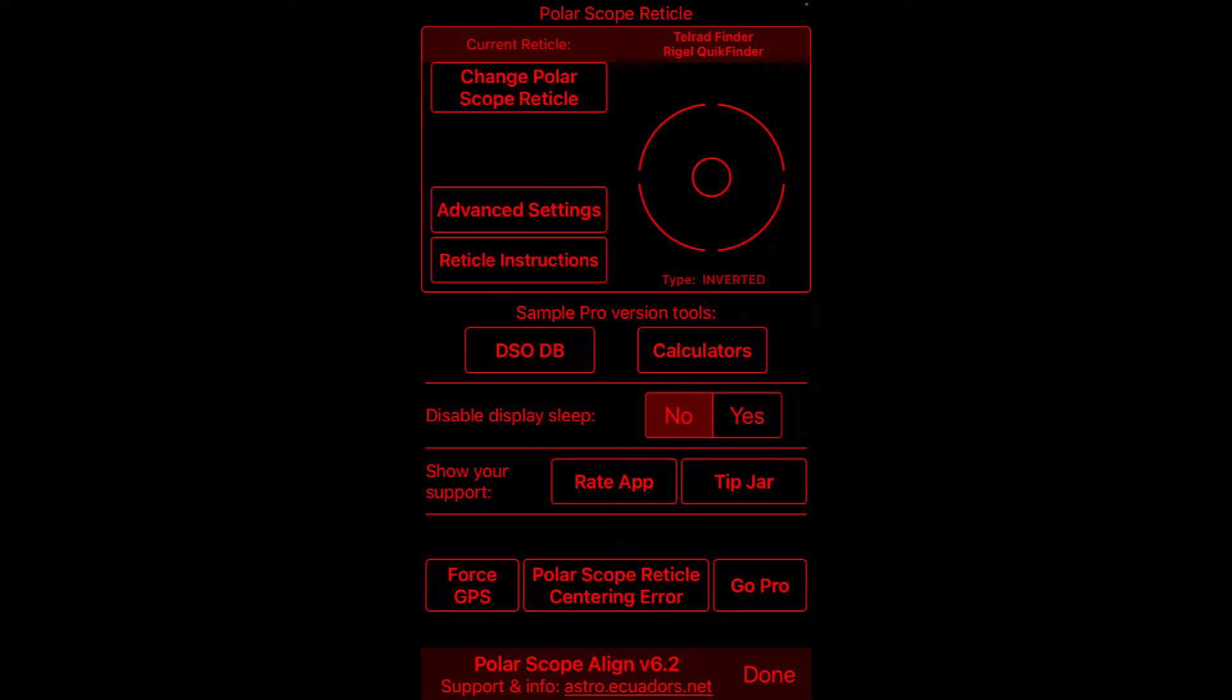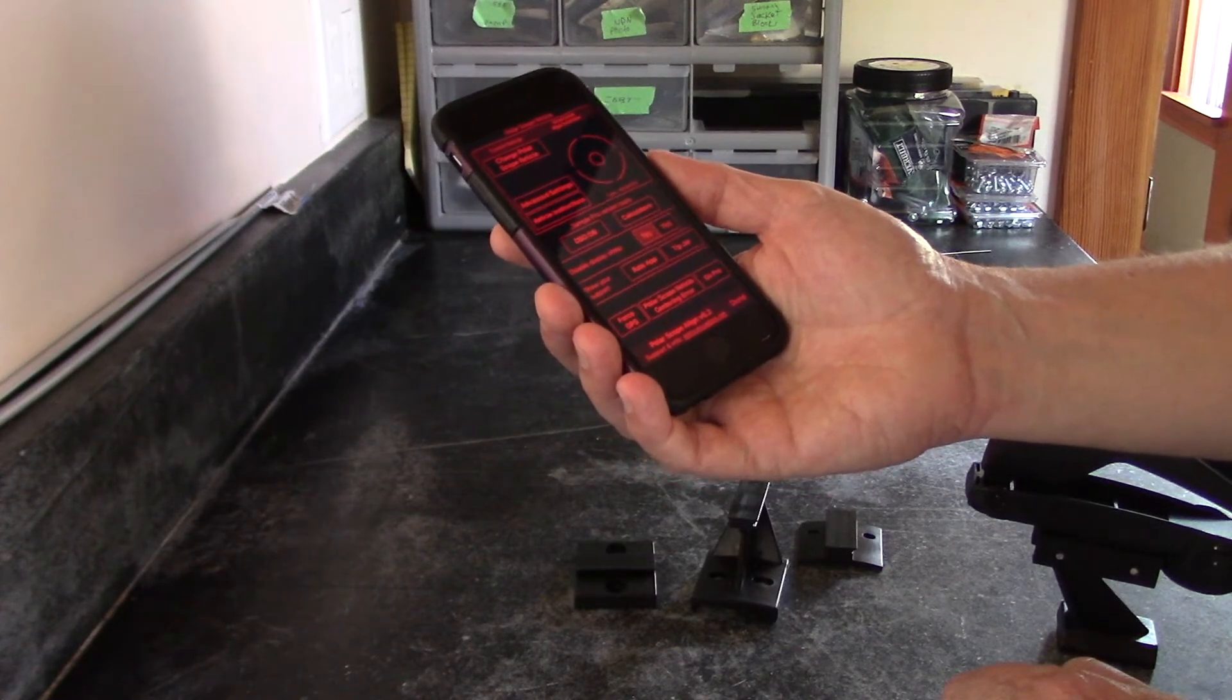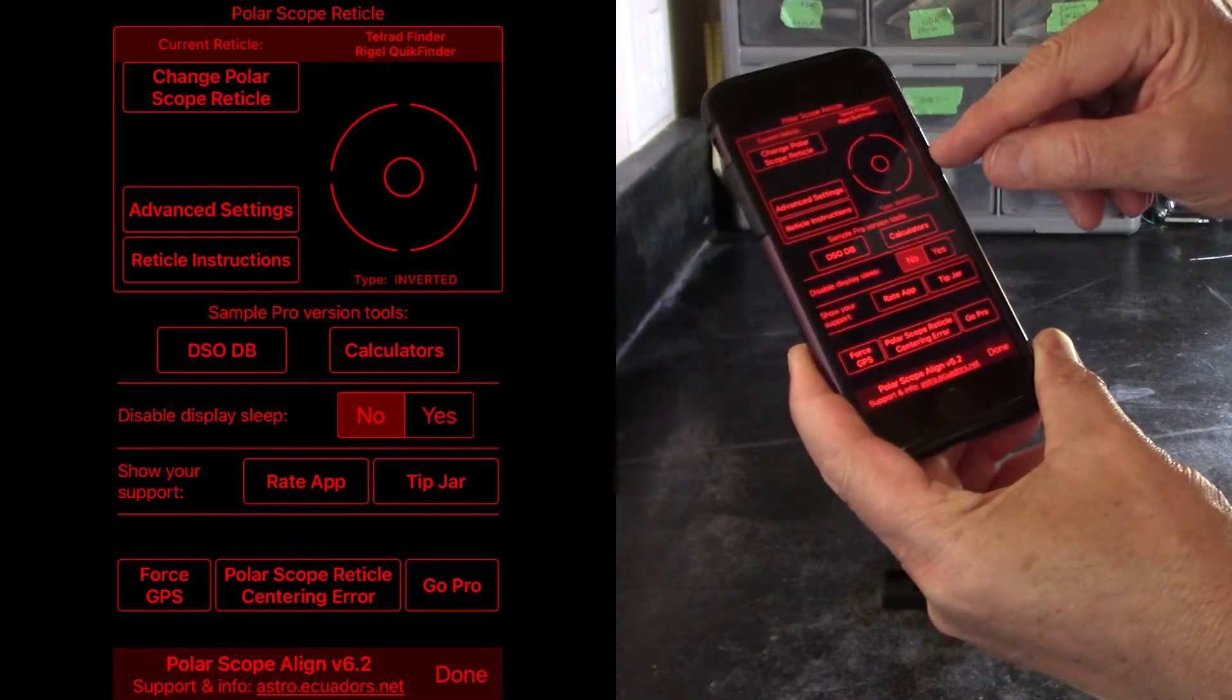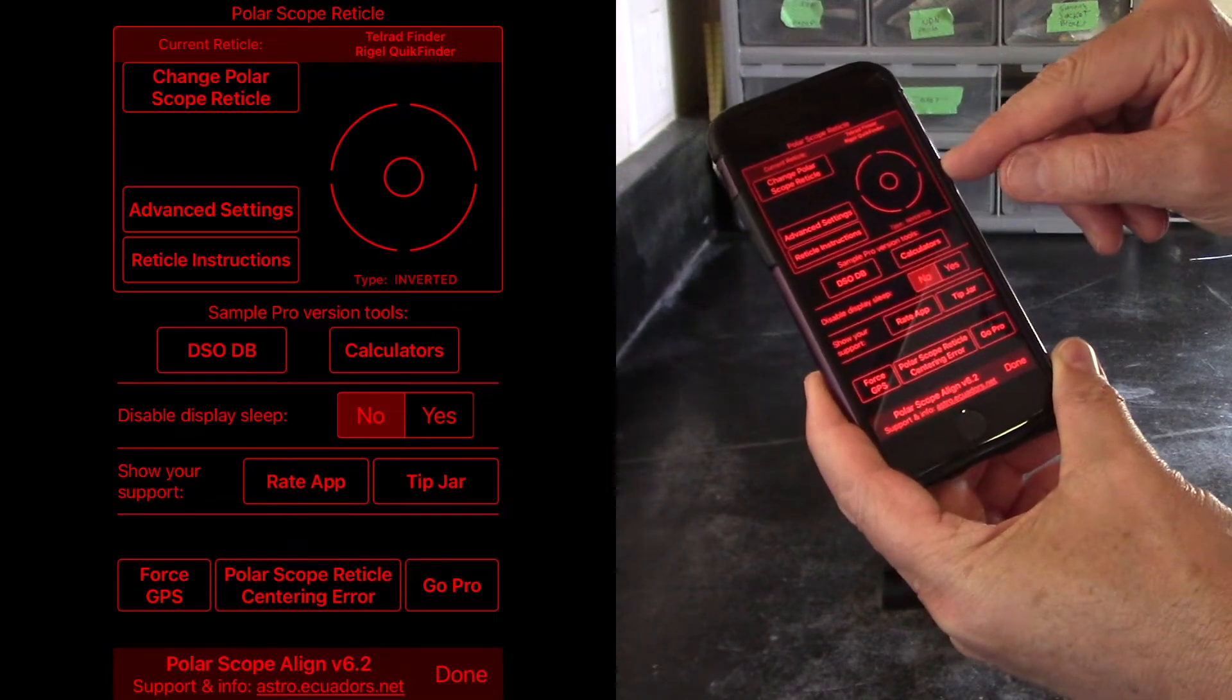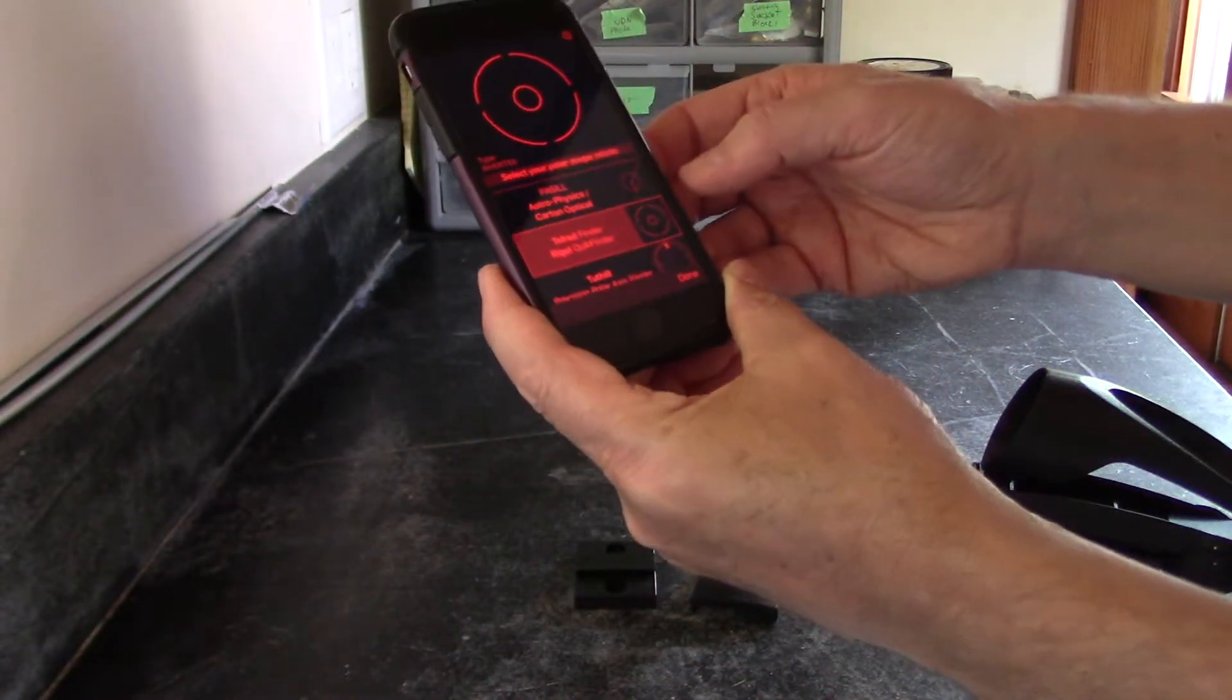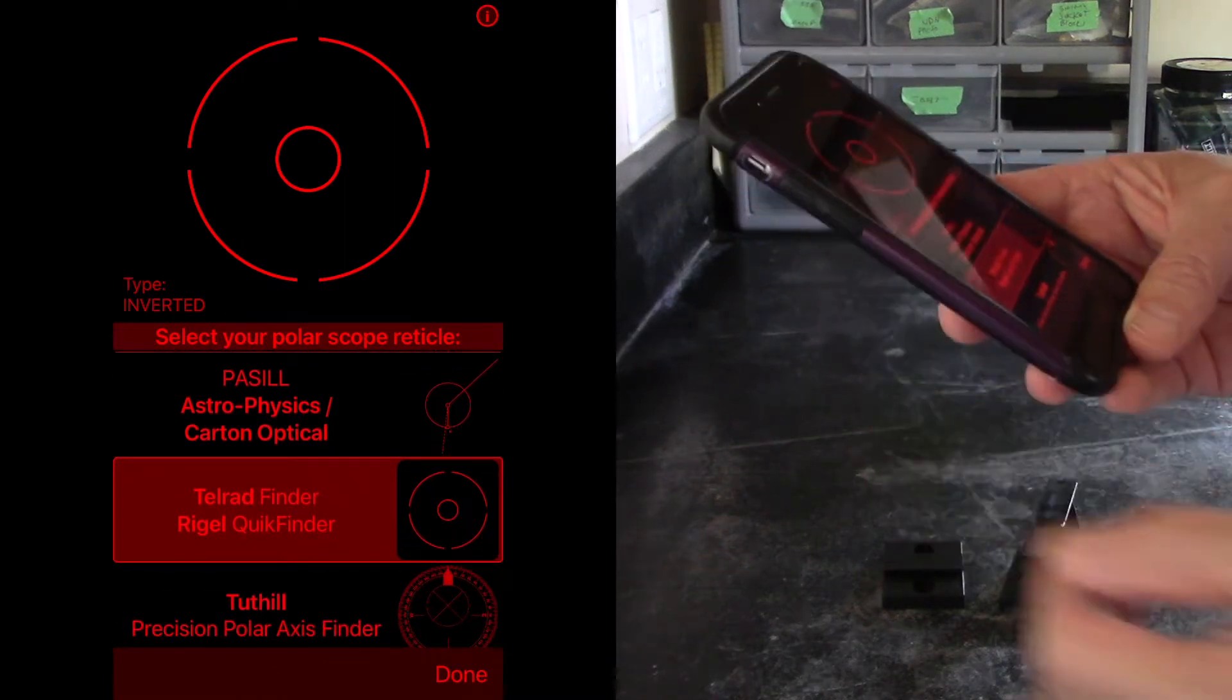Now if you're using an application like this, this is Polar Scope Align. This will help you align it on a polar axis. Then you can select the same reticle here, and this is one of the round ones in the list. Just go to change Polar Scope reticle. I've selected the TeleVue Finder Rigel Quick Finder.